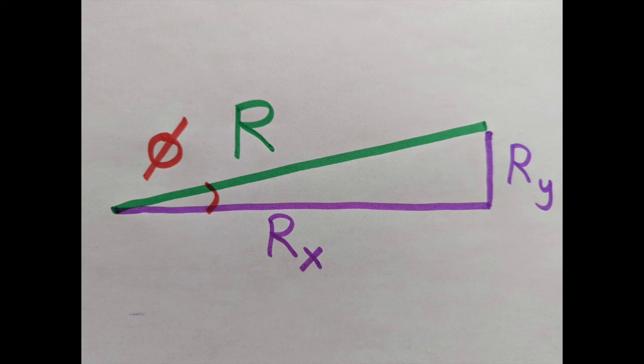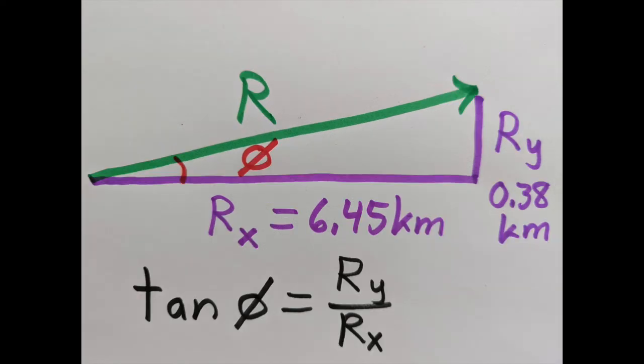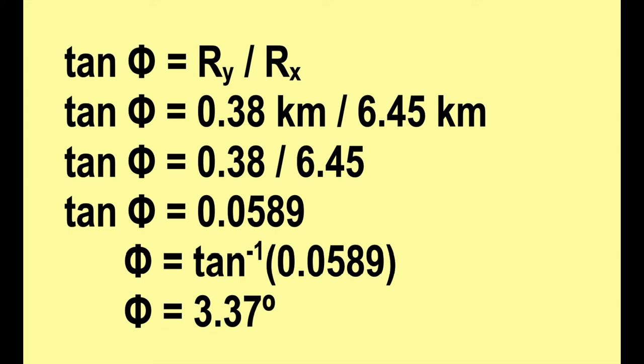Okay, almost done. The last thing we need is to find the angle phi. To do that, we're going to use the third trig function, tangent, which is opposite over adjacent. Since we know that RY is 0.38 kilometers and RX is 6.45 kilometers, we can plug those into the equation for tangent. When we do that, kilometers cancel in the fraction, so we have 0.38 over 6.45. We divide those and get 0.0589.